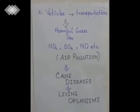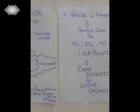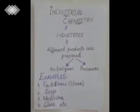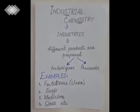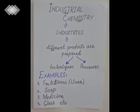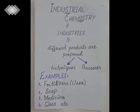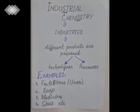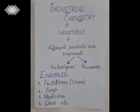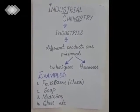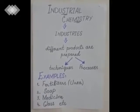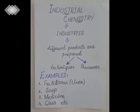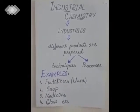All of these are studied in environmental chemistry. To summarize today's lecture: first, industrial chemistry — the fifth branch — where we study different techniques and processes used for the production of industrial products such as fertilizers, soap, medicine, and glass.